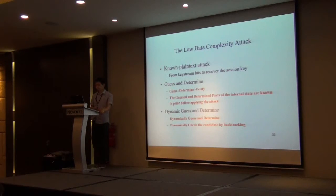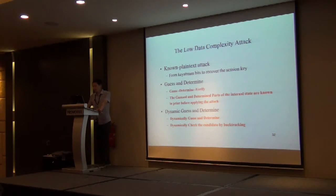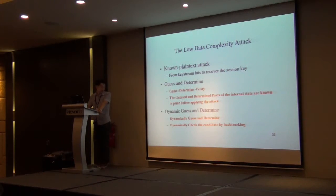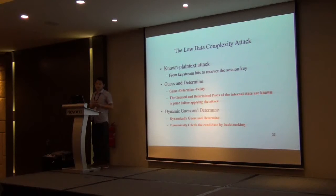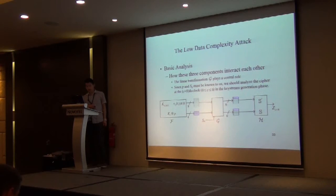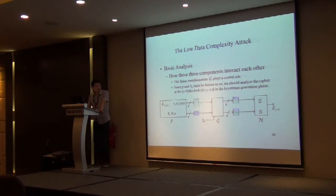Now we will give the low data complexity attack. In the traditional guess-and-determine attack, the guess and determine parts of the internal state are known before applying the attack. For example, if we guess the value of K1 we can determine the value of K2 or K3. However, in our attack — which we call the dynamical guess-and-determine attack — we dynamically guess and determine: if we guess K1, in some cases we will determine K2, in some cases we will determine K3, and in other cases we may not determine anything.